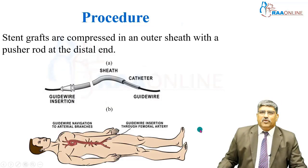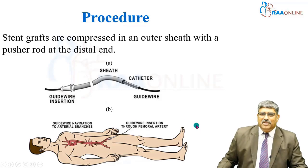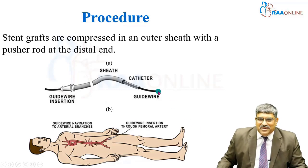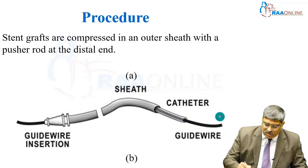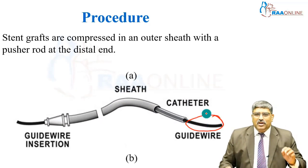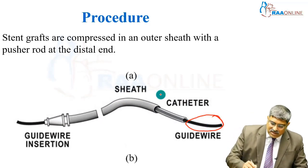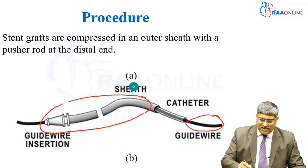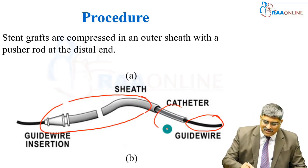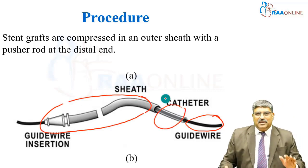Coming to the procedural placement: first, the guidewire is placed into the vascular lumen. Then you put a sheath. Through this sheath, you place the stent. That is how it is done.